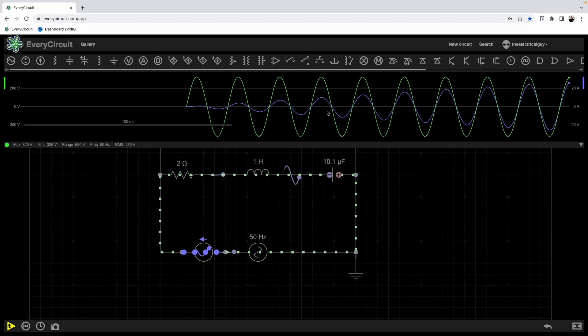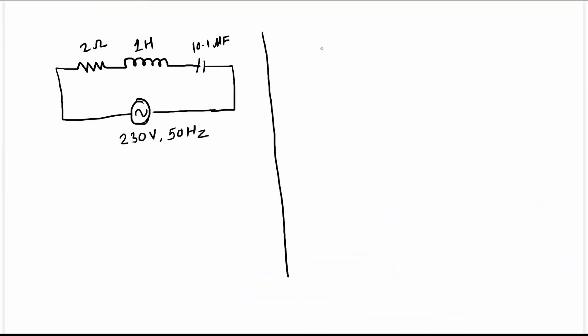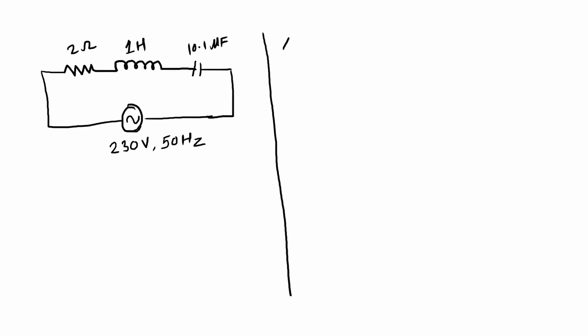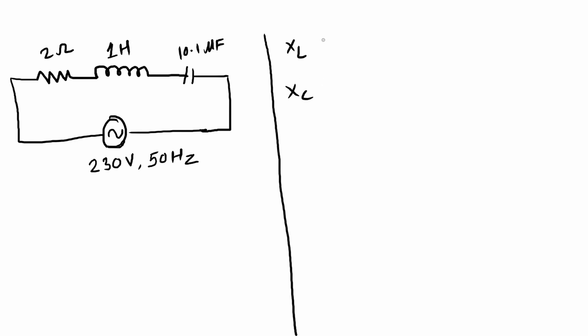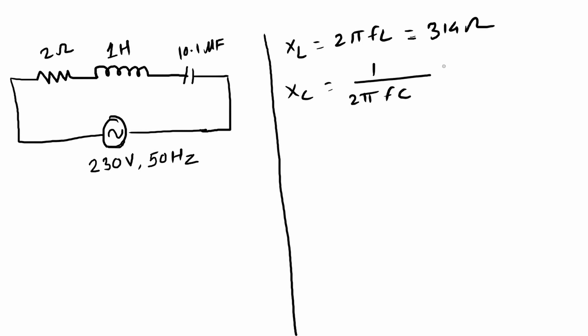We can also prove this using mathematical expressions. First, we need to identify the total opposition offered by this circuit — that means the impedance. We need to calculate the values of inductive reactance XL and capacitive reactance XC. XL — the formula is 2πfL — gives 314 ohms. Similarly, XC — the formula is 1 divided by 2πfC — gives approximately 314 ohms.